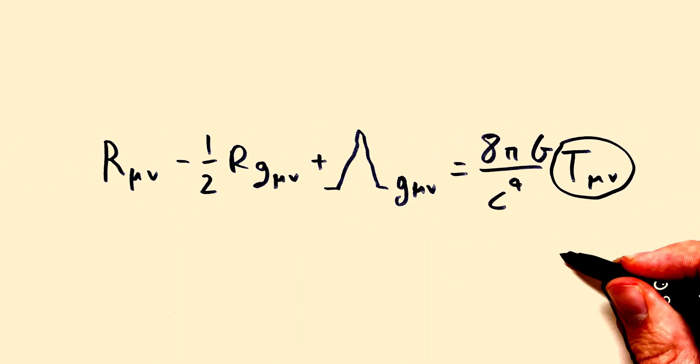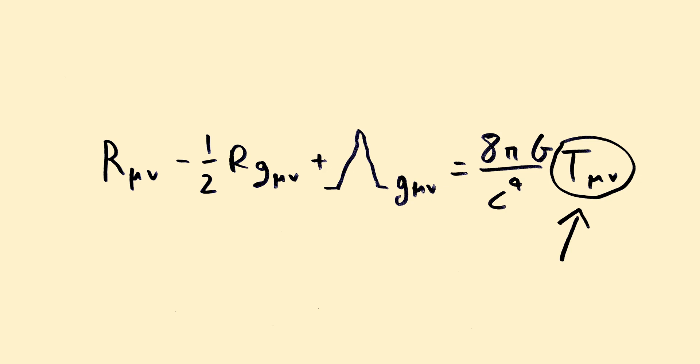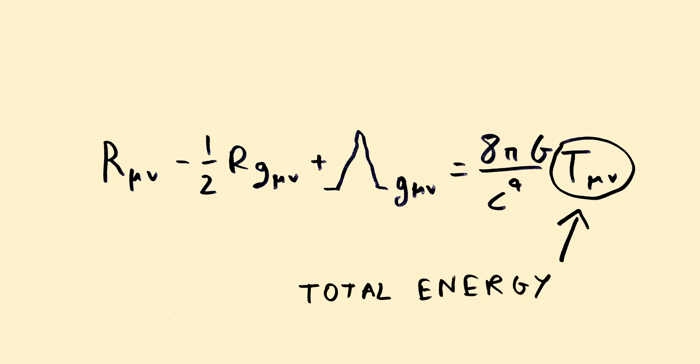And here, in this term, you can use as an input the energy of an object. But that's the total energy. Not just its mass. Because even photons, which don't have any mass, still attract other objects gravitationally.